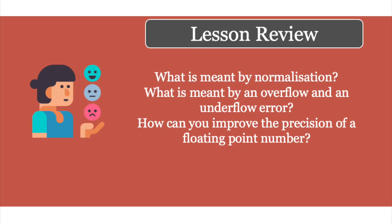That brings us to the end of this particular unit and section. You should know by now what is meant by normalization. You should also understand what overflow and underflow errors mean in relation to mantissa and exponents. When a number is bigger than what can be stored in the allocated mantissa and exponent bits, it causes an overflow. When a number is too small to be represented accurately, that's an underflow error. You can improve the precision of a floating-point number by allocating more bits to the mantissa part. That's all for today - I'll see you in the next one.